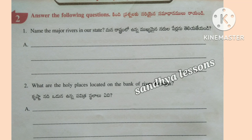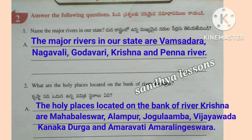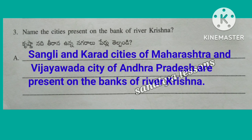Third, answer the following questions. First question: Name the major rivers in our state. The major rivers in our state are Vamsadara, Nagavali, Godavari, Krishna, and Penna river. Second question: What are the holy places located on the bank of river Krishna? The holy places are Mahabaleshwar, Alampur, Jogulamba, Vijayawada Kankadurga, and Amaravati Amaralingeswara. Third question: Name the cities present on the bank of river Krishna. Sangli and Karada cities of Maharashtra, and Vijayawada city of Andhra Pradesh are present on the banks of river Krishna.